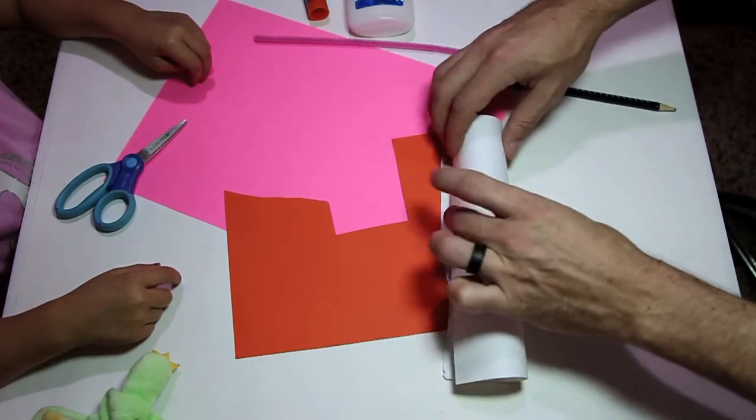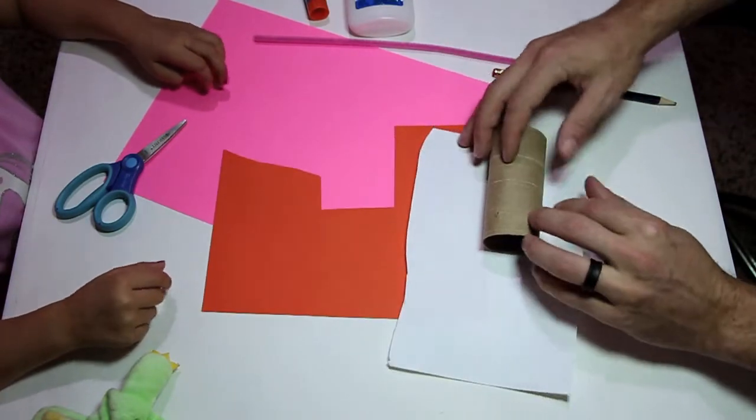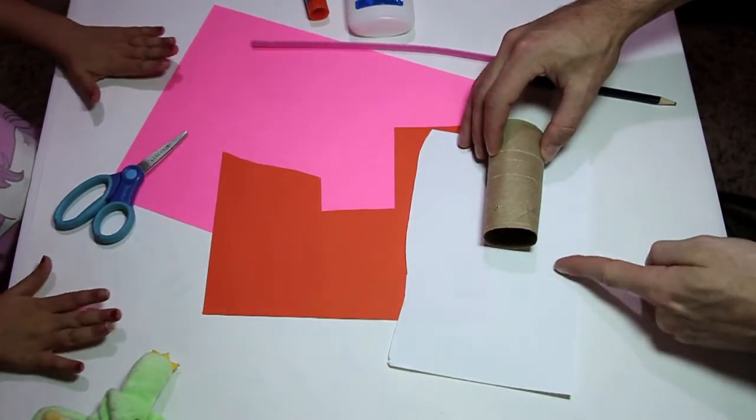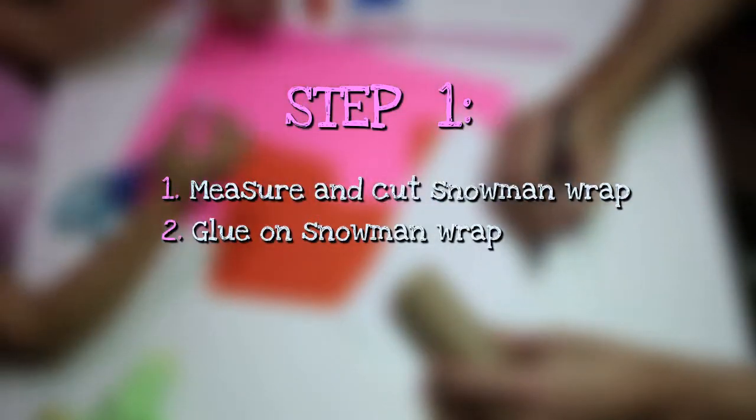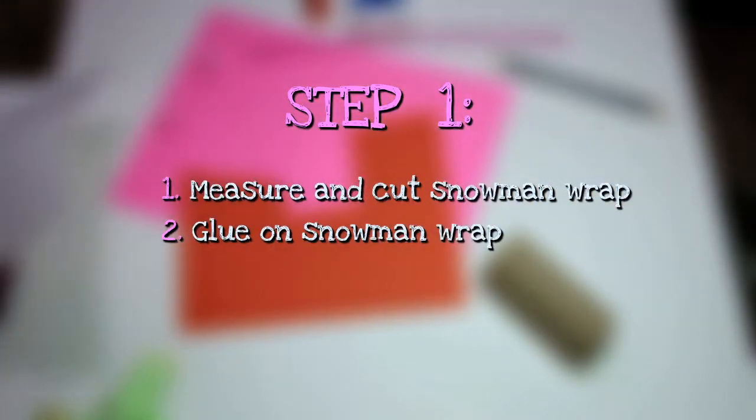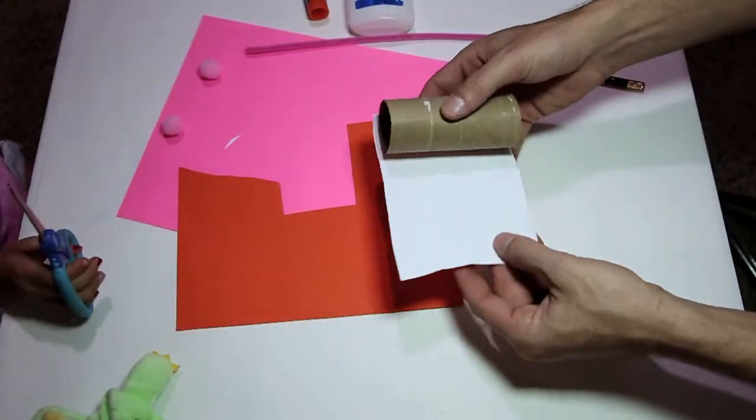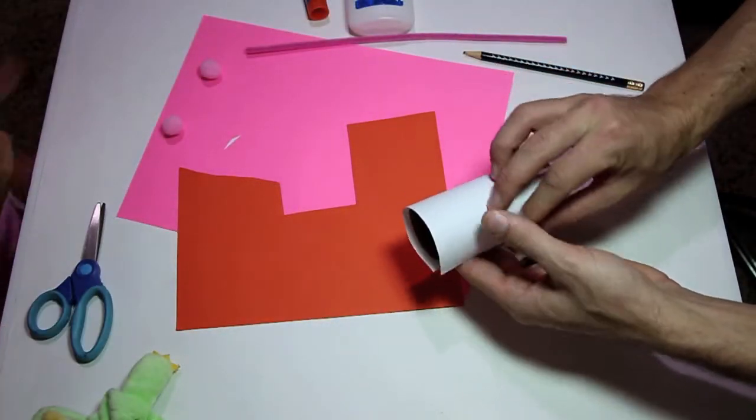Now after you've cut it for the measurement around, you're going to measure the height, draw a line right here, and cut that out. Now that it's cut, you're going to glue it on your roll.